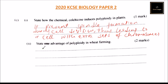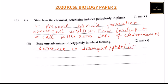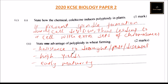Roman numeral two: state one advantage of polyploidy in wheat farming. One advantage is resistance to drought, pests, or diseases. Another is that it helps in giving high yields. The third is early maturity of the plant. If you mention any one of these you get two marks, but I have given you three. That is how you answer that question.